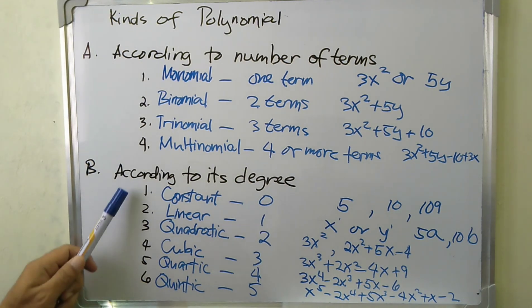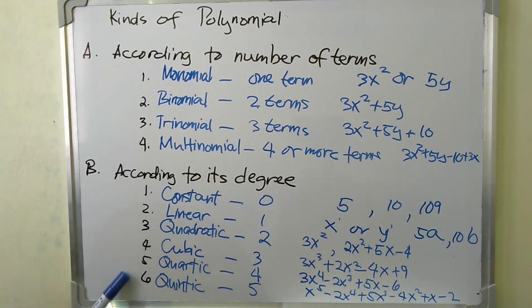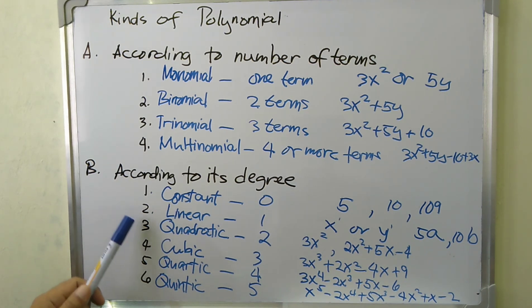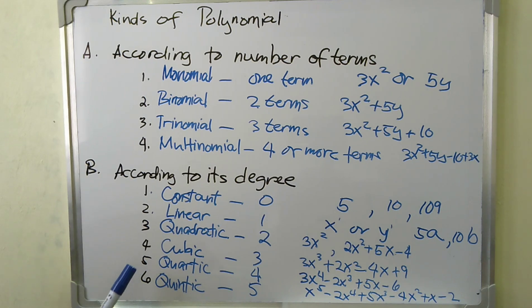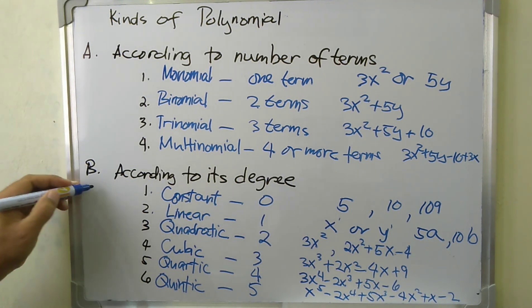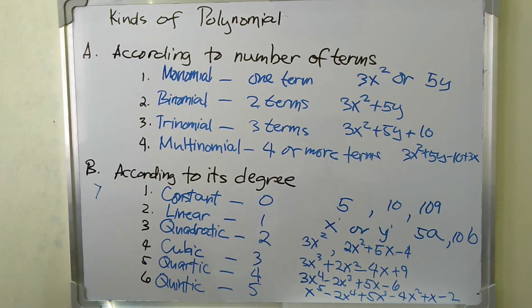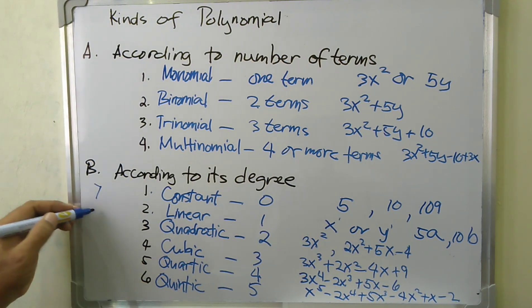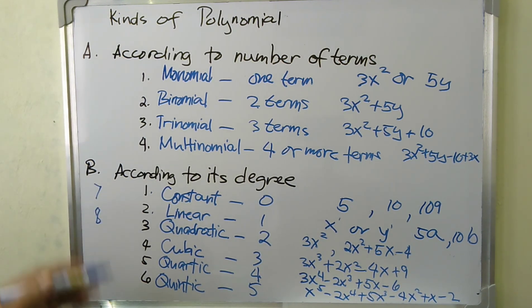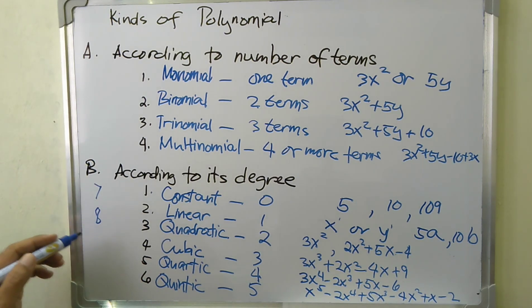As of today, we only have these polynomials with universal names. If the polynomial has degree seven, we call it a polynomial of degree seven. If it is of degree eight, we call it a polynomial of degree eight, because we have no universal name for polynomials with those degrees.